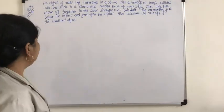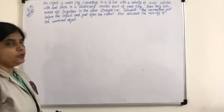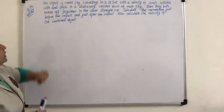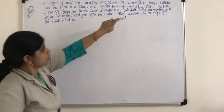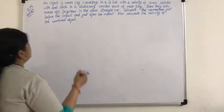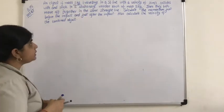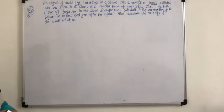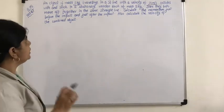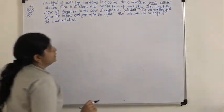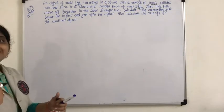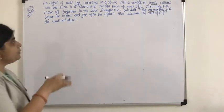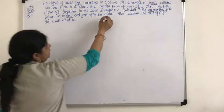Now let us start with question number 15 of NCERT. An object of mass 1 kg traveling in a straight line with a velocity of 10 meters per second collides with and sticks to a stationary wooden block of mass 5 kg. Then they both move off together in the same straight line. Calculate the momentum just before the impact and just after the impact.